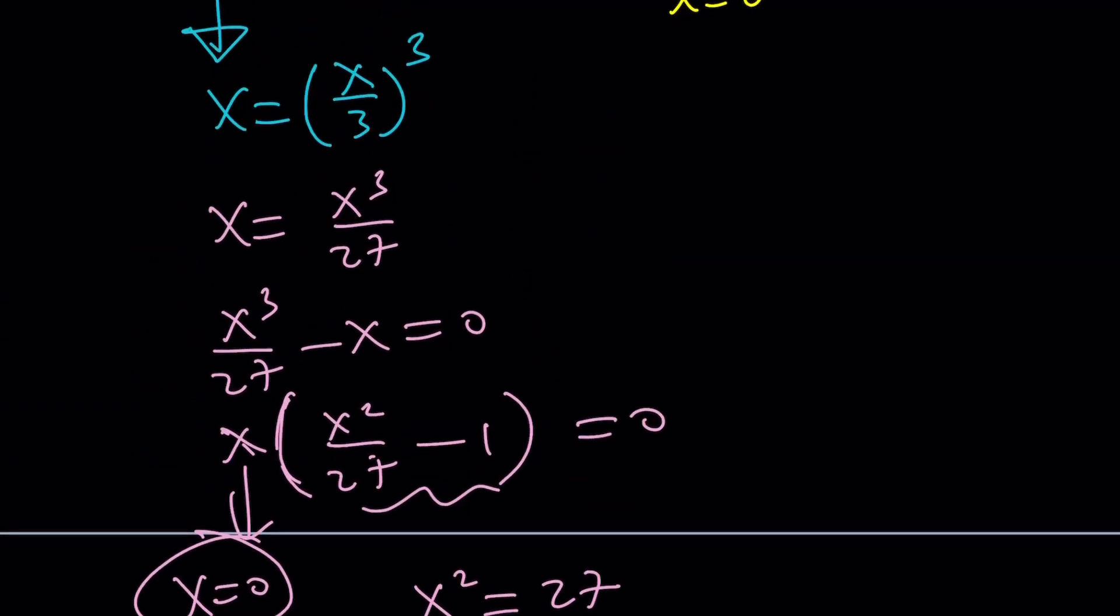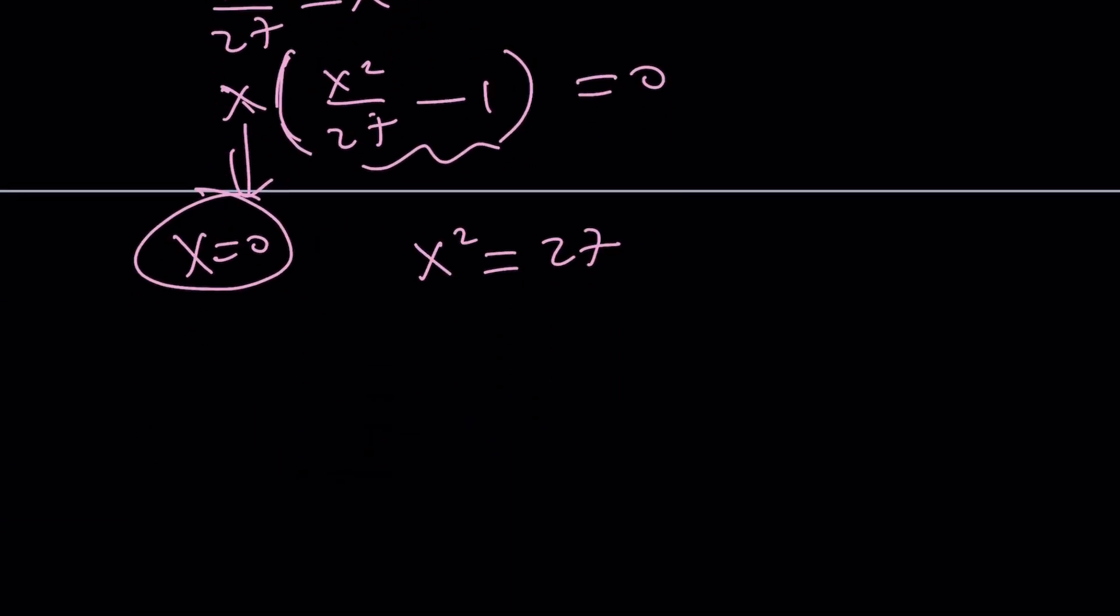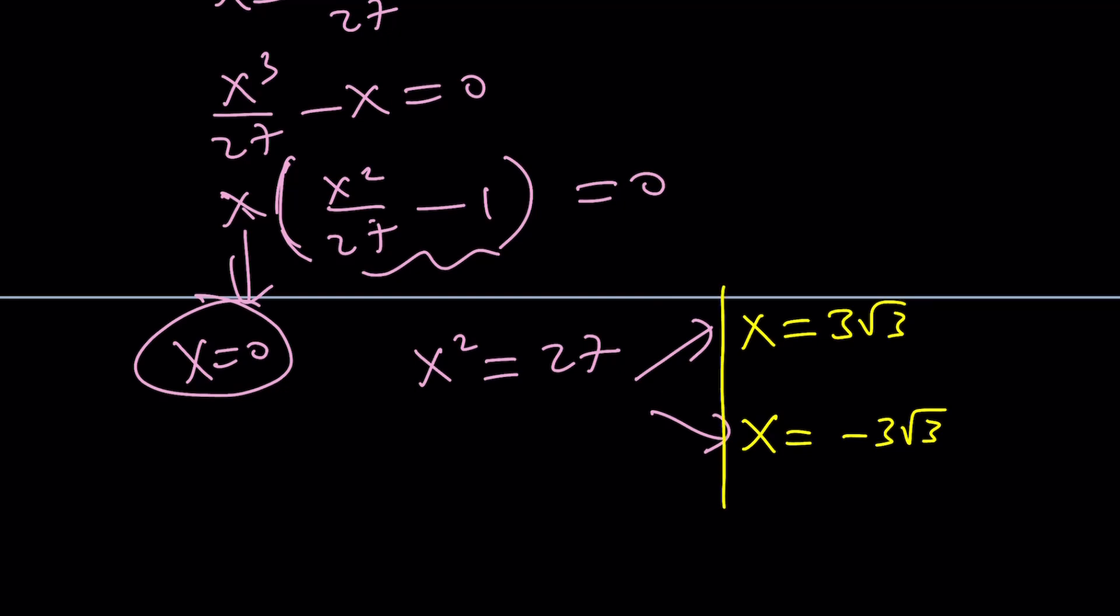This gives us x squared equals 27. Is that a surprise? Well, that just means that x is equal to the square root of 27. But there are two possible values. Let's consider both of them. If you use square root 27, you're going to get three root three or negative three root three. Again, I'm not talking about the square root of 27, the negative square root of 27. Now, do you think both of these solutions will satisfy the original equation? We need to check.